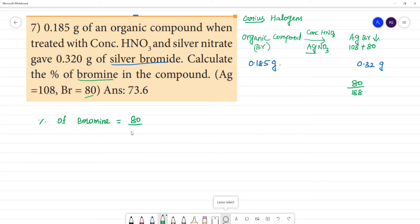Into. So, what is the precipitate? 0.32. Divided by total weight of the organic compound, 0.185. Into 100. So, if we calculate, we can calculate the percentage.